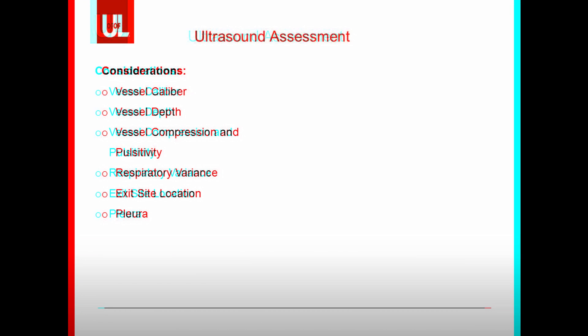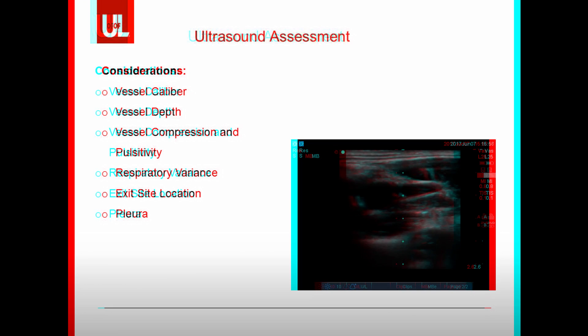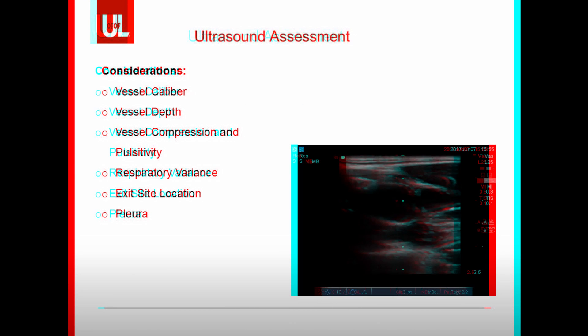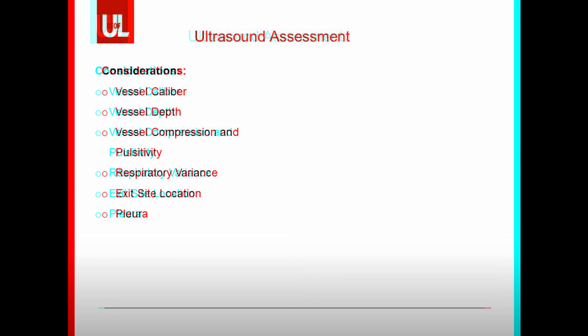Prior to placing a central line, we must perform an ultrasound assessment to identify an ideal site for access. We will show an abbreviated version of the Rapid Clinical Evaluation for Vascular Access, or RACIVA, survey. Ultrasound considerations include examining vessel caliber — the catheter should be no more than one-third the size of the selected vessel, with the catheter's French size equal to or less than the vessel's diameter in millimeters. Consider depth of the vessel relative to nearby structures, assess for vessel compression and pulsatility to differentiate artery from vein and exclude thrombus, and evaluate respiratory variation. Exit site selection helps prevent unnecessarily high catheter placement, and a brief pleural examination evaluates for pre-existing pathology.